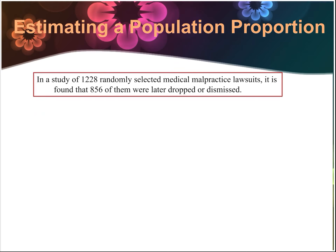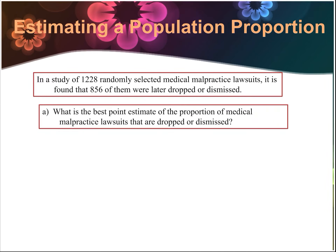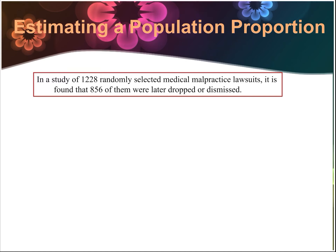In a study of 1,228 randomly selected medical malpractice lawsuits, 856 of them were later dropped or dismissed. What is the best point estimate of the proportion that are dropped or dismissed? The best point estimate for the proportion would be p-hat = 856 out of 1,228, which is 0.697. This is the best point estimate of the entire population's parameter for the proportion.